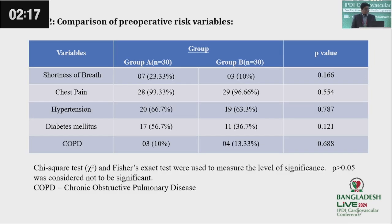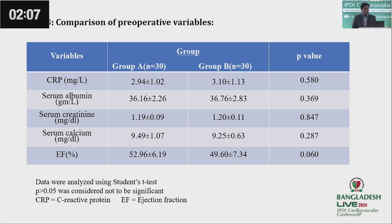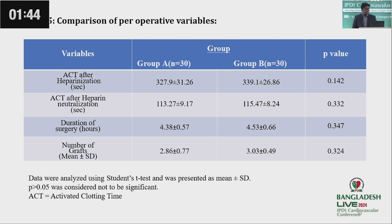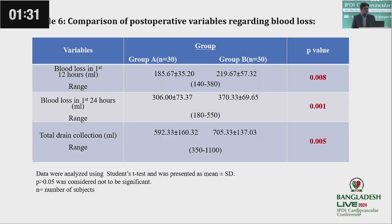The comparison of preoperative risk variables — shortness of breath, chest pain, hypertension, diabetes, and COPD — none were found to be significant. Preoperative biochemical, hematological, and echocardiographic variables including CRP, serum albumin, creatinine, serum calcium, ejection fraction, hemoglobin, prothrombin time, and activated partial thromboplastin time were also not significant. However, platelet count was significantly lower in Group B. Intraoperative variables — activated clotting time after heparinization and after neutralization, duration of surgery, and number of grafts — were also not statistically significant.